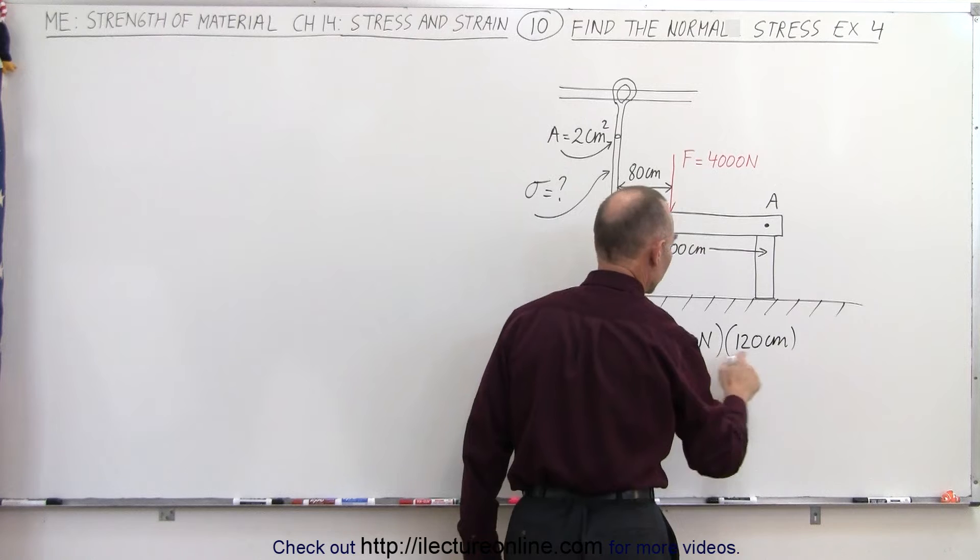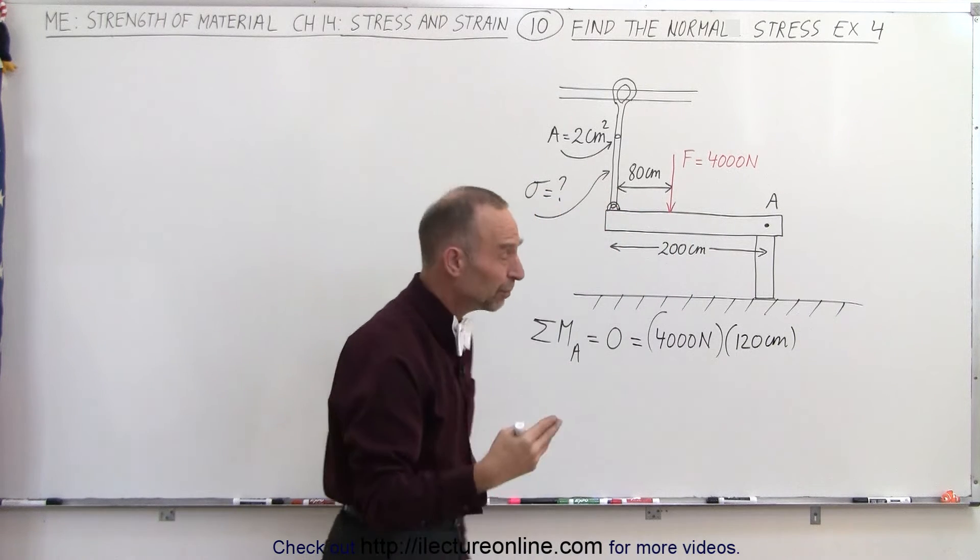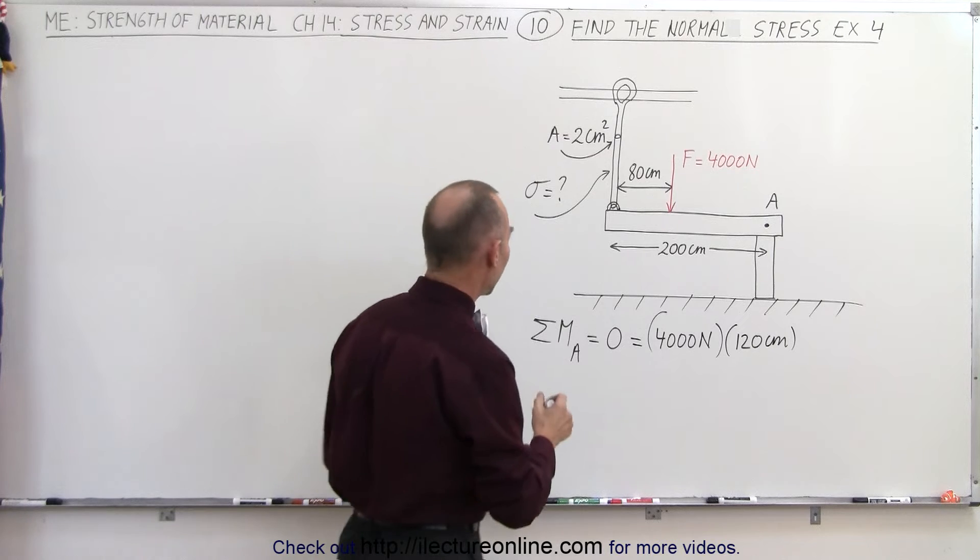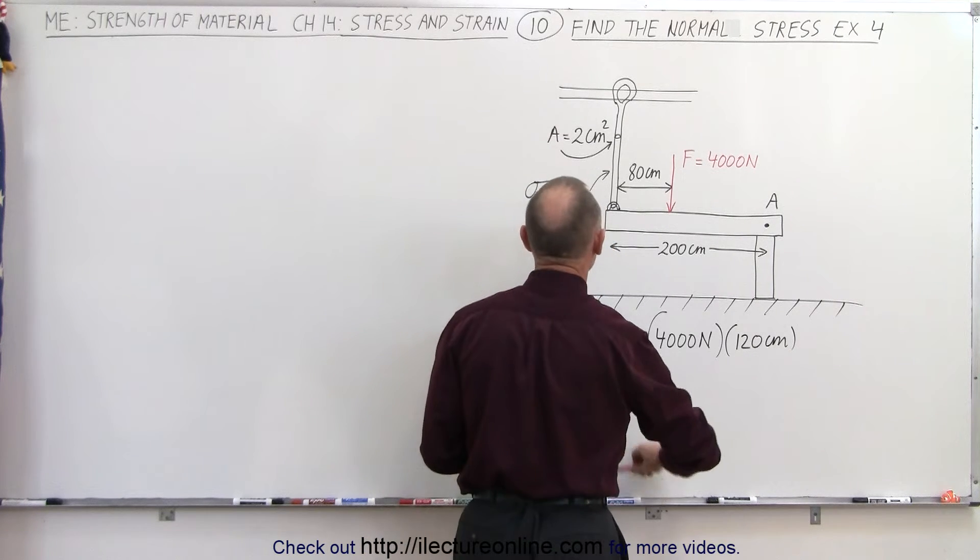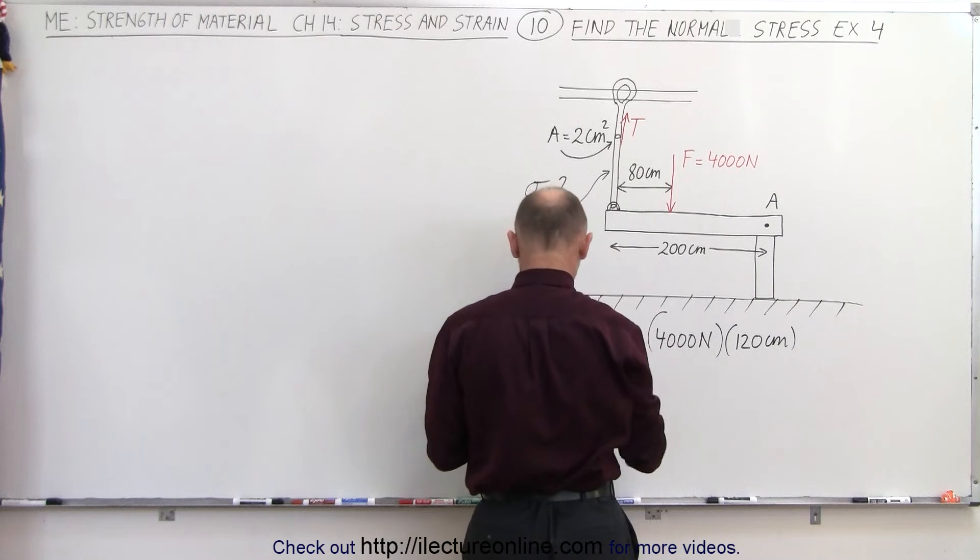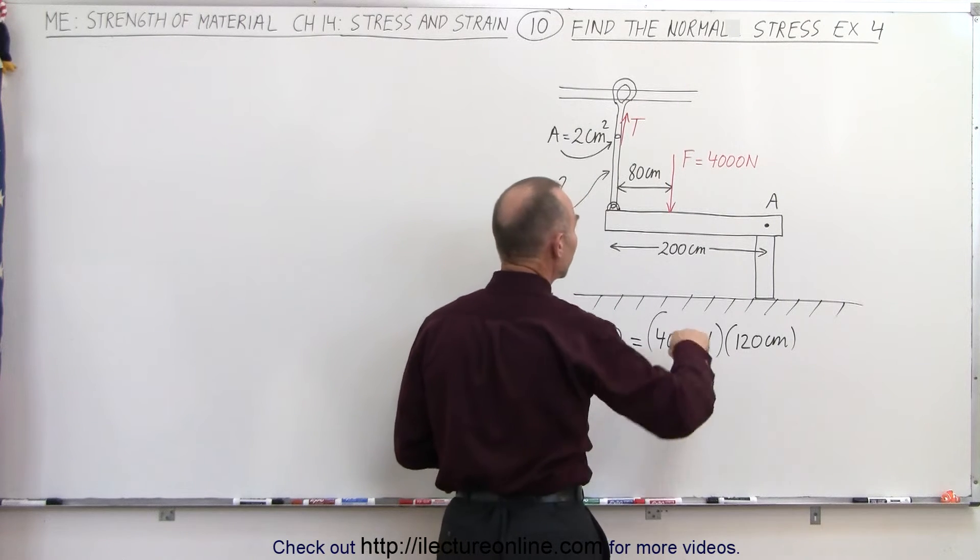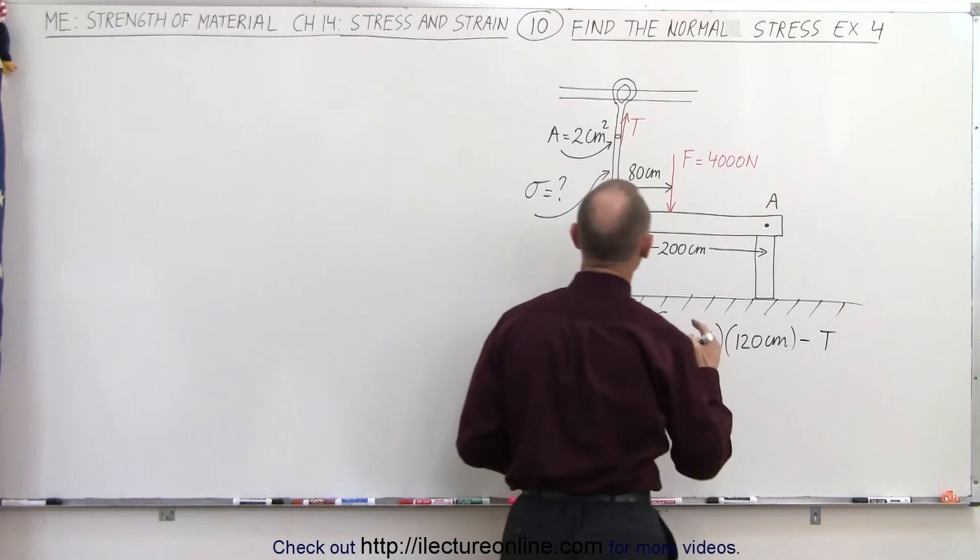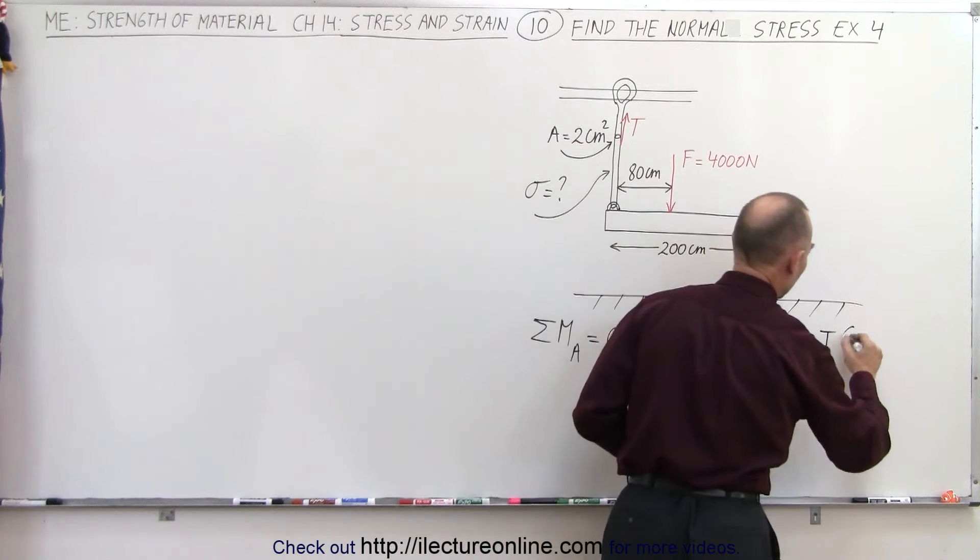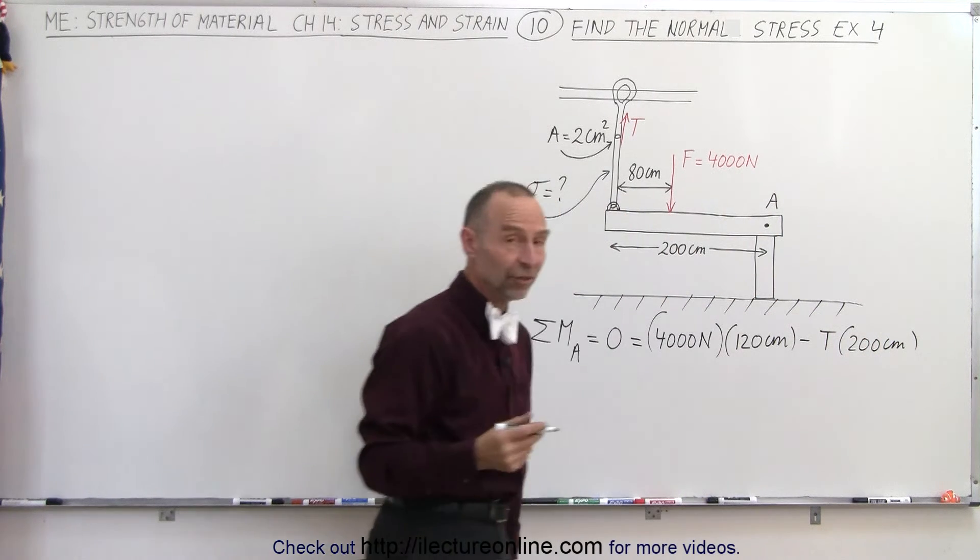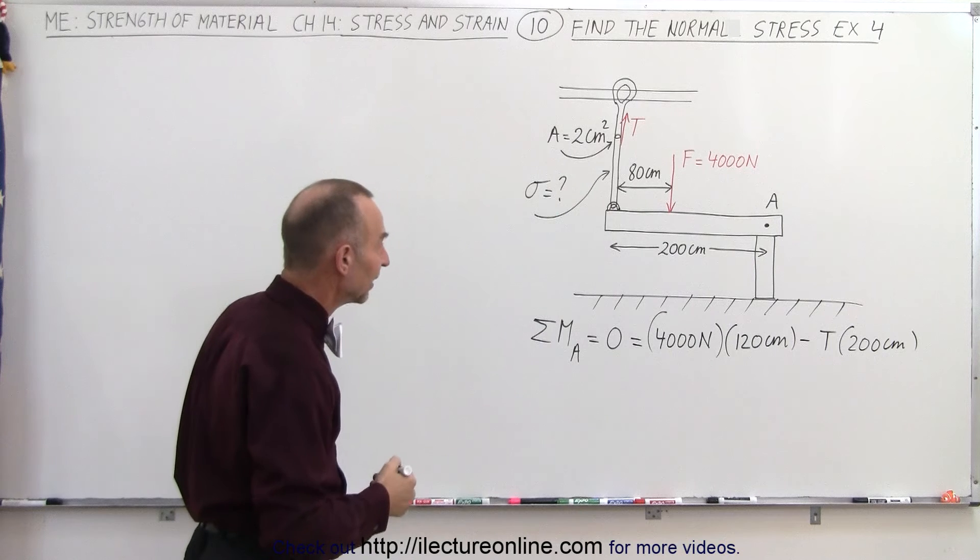Now I realize that we have newtons and centimeters mixed, but I think we can be okay with that because they will cancel out. And then we have a second force, which is the tension, which is pulling up along the cable, so let's call that T for tension, and that will be a clockwise moment, so therefore we have minus the tension multiplied times the moment arm, which is 200 centimeters, and that will then add up to zero because we don't have anything that's moving.